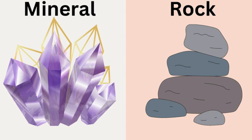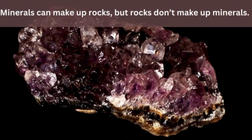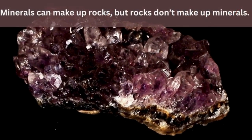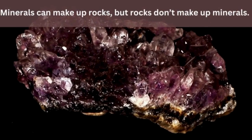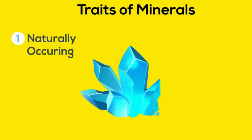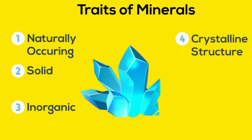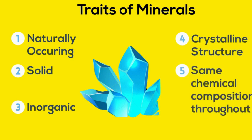Let's talk about the difference between a rock and a mineral. Remember, minerals make up rocks, but rocks don't make up minerals. A mineral has five characteristics: they are naturally occurring, solid, inorganic, have a crystalline structure, and also the same chemical composition throughout.